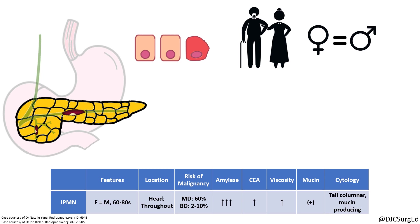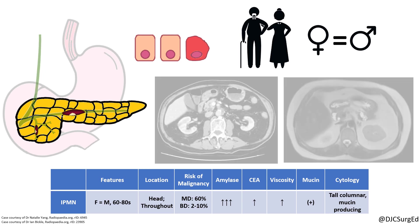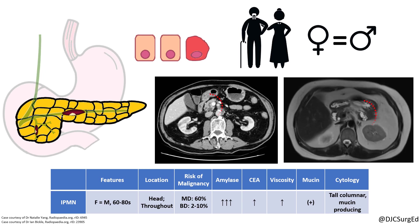On imaging, they appear as hypoattenuating cystic lesions with pancreatic ductal dilatation, best visualized on MRI. Generally speaking, resection is recommended for all main duct IPMNs and IPMNs with high risk stigmata.